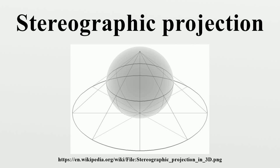It is believed that the earliest existing world map, created in 1507 by Gualterius Ludd of St. Dié, is based upon the stereographic projection, mapping each hemisphere as a circular disk. The equatorial aspect of the stereographic projection, commonly used for maps of the eastern and western hemispheres in the 17th and 18th centuries, was utilized by the ancient astronomers like Ptolemy. François d'Aguillon gave the stereographic projection its current name in his 1613 work Opticorum Libris.